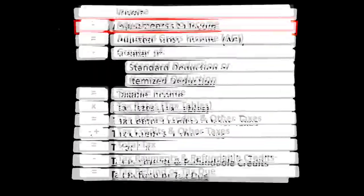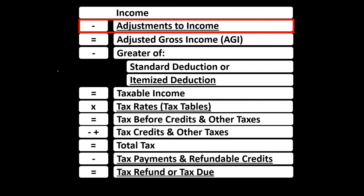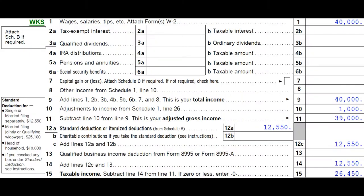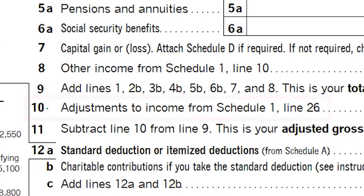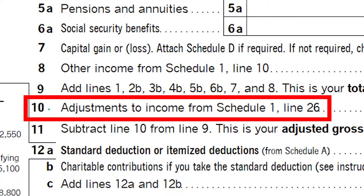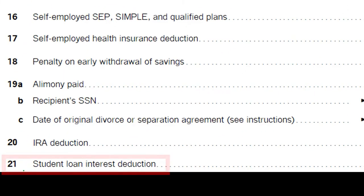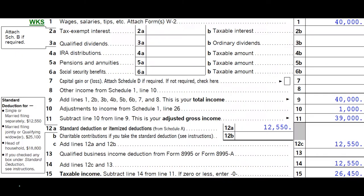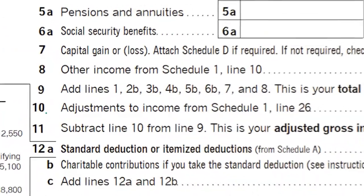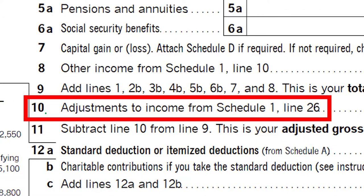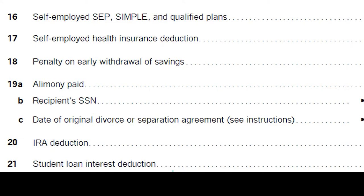These are the deductions for adjusted gross income — keep them distinct from the standard and itemized deductions. On page one of Form 1040, we're focused on line 10, adjustments to income from Schedule 1 line 26. On Schedule 1 Part 2, we're focused on line 21, the student loan interest deduction, which flows into Form 1040 line 10.